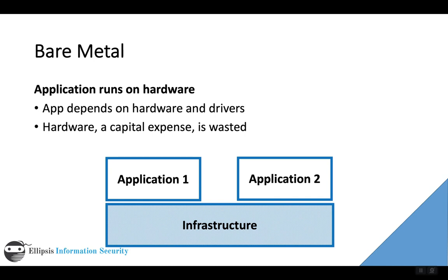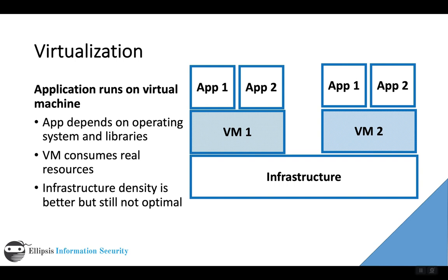Infrastructure is something you had to buy that you couldn't return — at least not after a very short period of time. It's a capital expense: you spend the money and the money is gone, with really no way to recoup your costs unless you wanted to take a huge loss. As time went by, virtualization came around and there was a partial solution for a lot of these problems.